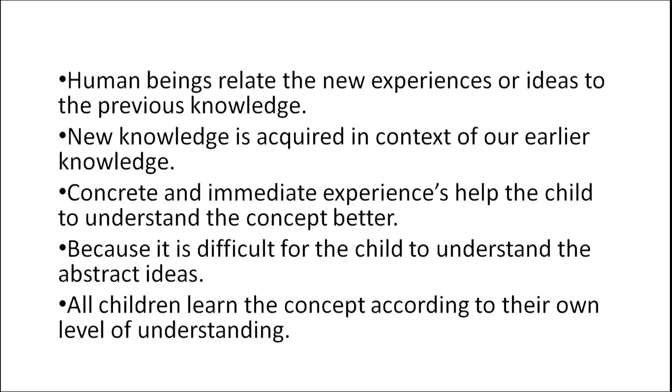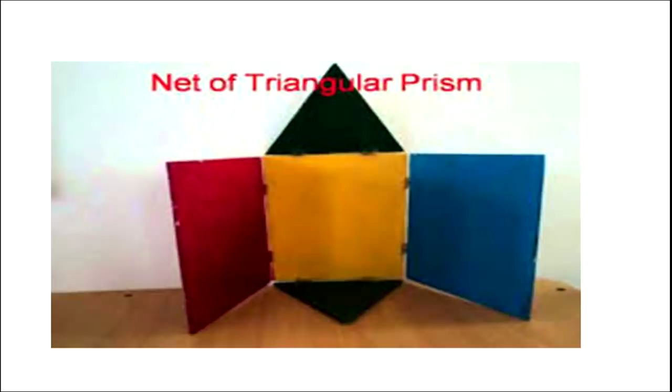For example, the child can categorize on the basis of shape, color, weight, etc. Learning becomes permanent because it is very difficult for a child to understand abstract ideas, and all children learn concepts according to their own level of understanding — what they see, what they understand, and what they absorb from it. For example, this is a picture of a triangular prism made in the class by the teacher with the help of students, having different shapes and colors, and it serves the purpose of a triangular prism.